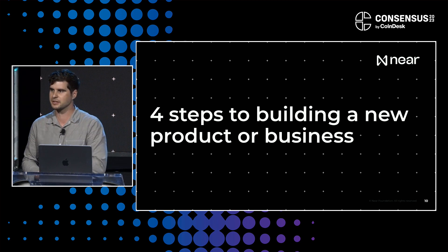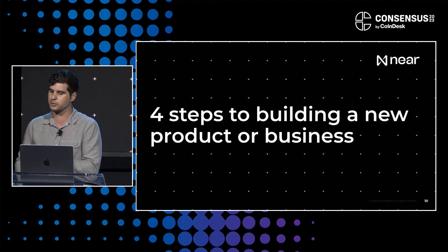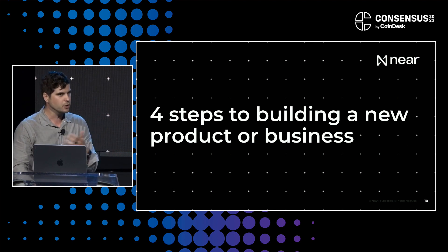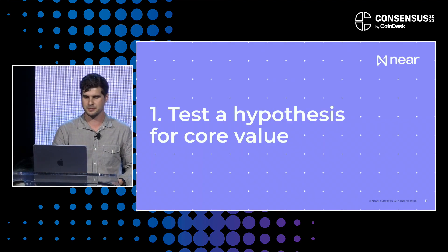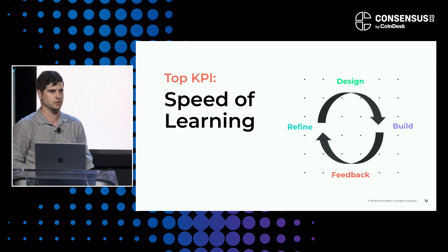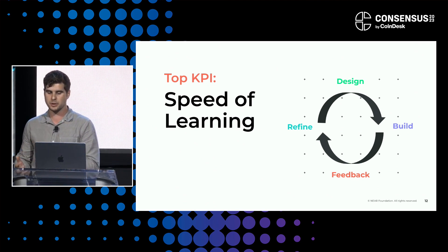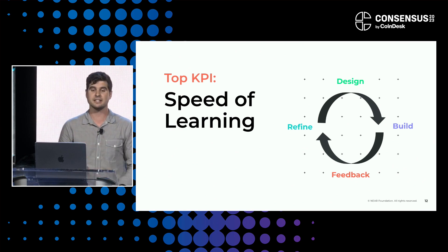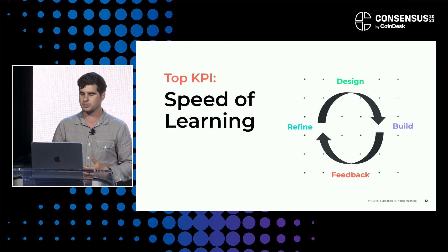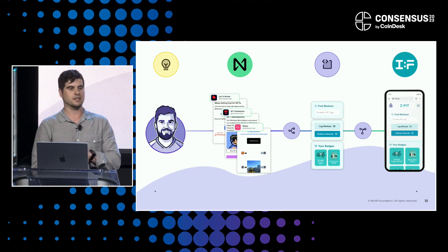From my experience as an entrepreneur building new businesses in Web2 and Web3, there are really four steps to building a new product. The first is to test a hypothesis of core value. The most important thing at this stage is to maximize your speed of learning — go through the design process, the build process, the feedback process, and refine as fast as possible. The more iterations you get in, the more refined your product will be. For Idris, this is what it looks like using the Boss.